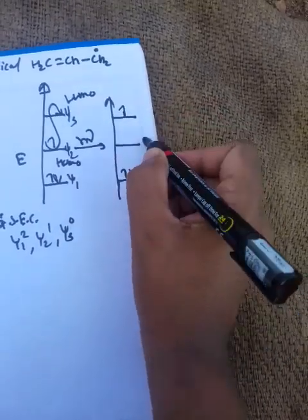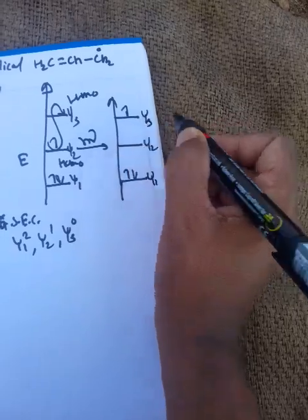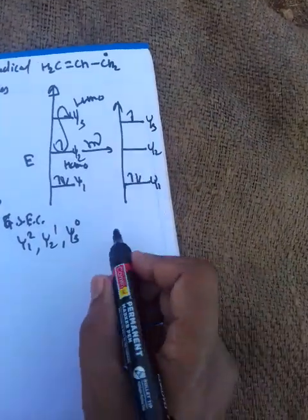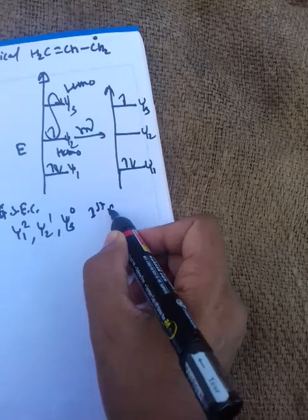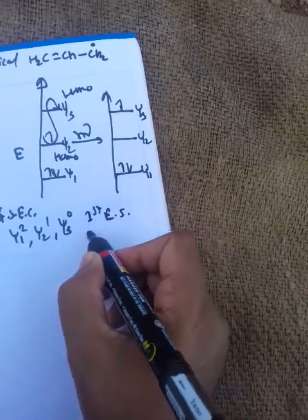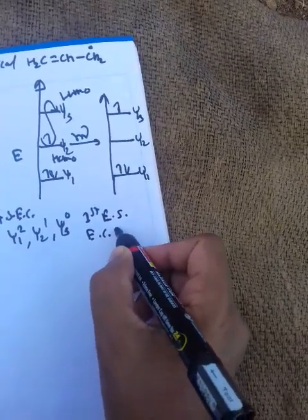So this is psi 1, psi 2, psi 3. What is the first excited state electronic configuration?